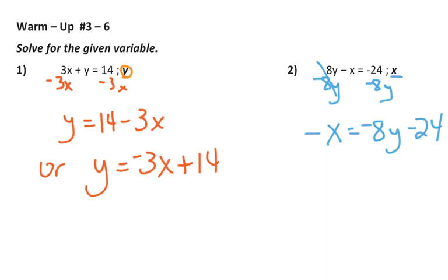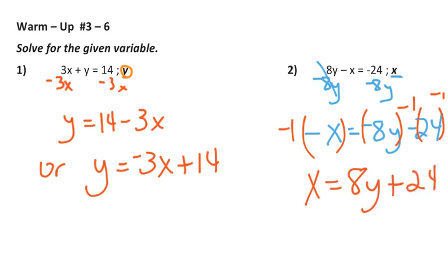And then I don't want negative x, I want to have positive x. So if I multiply by negative 1 and multiply everything on the other side by negative 1, I'm going to have positive x equals positive 8y plus 24, and that's what x is equal to. Now you also could say x equals 24 plus 8y. It doesn't matter for what we're doing.